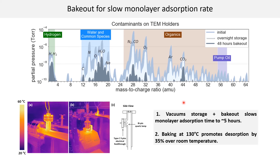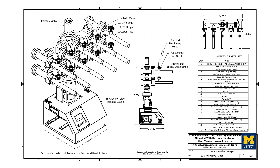We recommend bake-out for any specimen that can withstand moderate levels of heating. According to Boltzmann statistics, the surface molecules can be approximated as a distribution of binding energies. So, by baking at 130 degrees Celsius, we promote a desorption rate by 35% over just room temperature. Even for a specimen that is not so resistant to heating, we can still have it at slightly higher temperature than room temperature, and that would still result in a slightly better desorption rate.